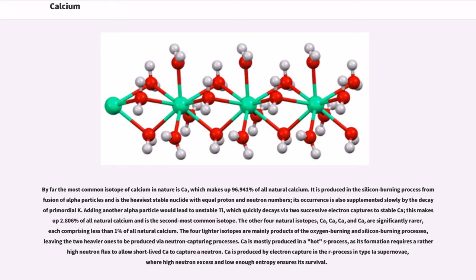By far the most common isotope of calcium in nature is ⁴⁰Ca, which makes up 96.941% of all natural calcium. It is produced in the silicon burning process from fusion of alpha particles and is the heaviest stable nuclide with equal proton and neutron numbers. Its occurrence is also supplemented slowly by the decay of primordial ⁴⁰K. Adding another alpha particle would lead to unstable ⁴⁴Ti, which quickly decays via two successive electron captures to stable ⁴⁴Ca.